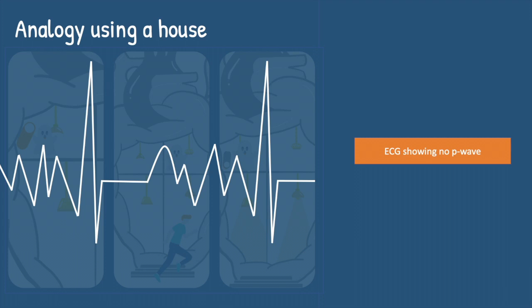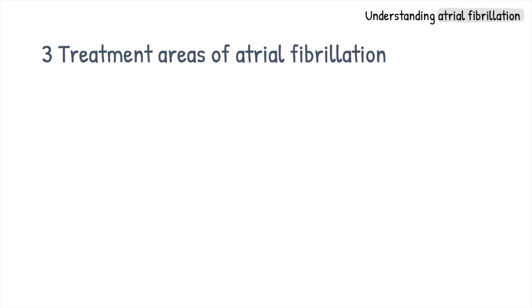The treatment of AF generally comprises three main areas: the heart rhythm itself, associated diseases, and the prevention of stroke. Managing the heart rhythm is divided into two main strategies: controlling the heart rate or restoring normal rhythm.